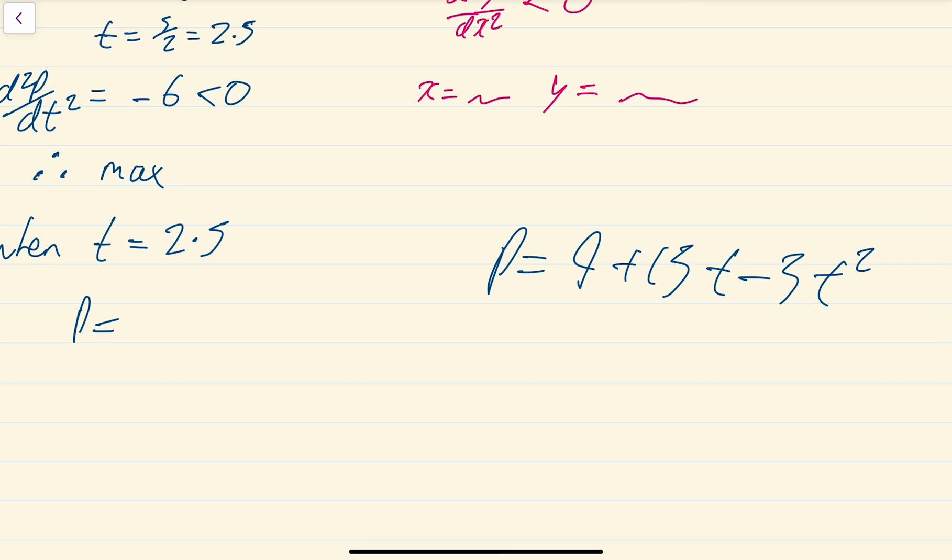That's 9 + 15(2.5) - 3(2.5)². When I work that out I get 27.75. Let me check that - yes, 27.75. If it hadn't been exact, you would round to two decimal places, but that's us done.